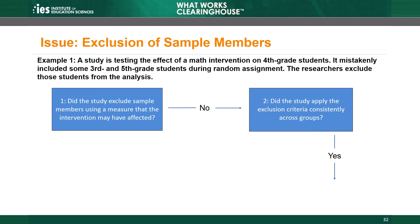To assess attrition for a study in this category, the WWC only calculates attrition within the subsample — that is, the students who are in the 4th grade. The denominator should be the number after exclusions, not the full sample. In this case, the denominator would be the number of students randomized after excluding the 3rd and 5th graders.